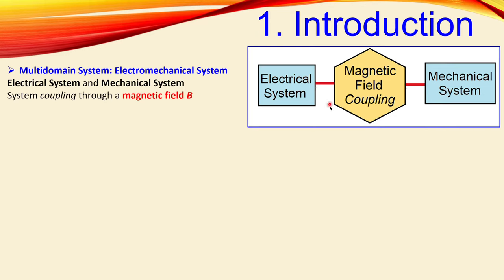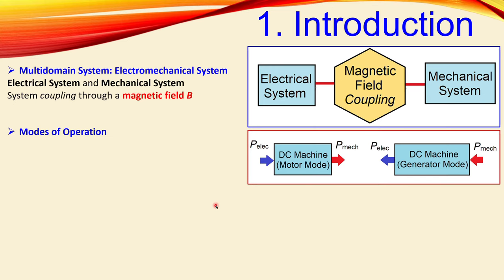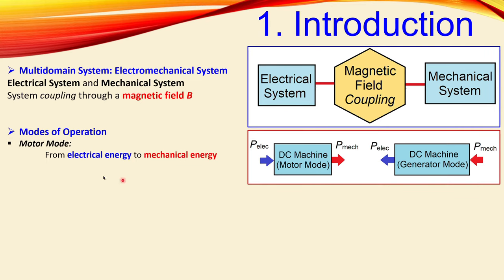This coupling is done by a magnetic field. Now for the motor's operation we have two modes. You can apply electrical power and get mechanical power out — that is motor mode. The reverse is called generator mode: you apply mechanical power, something is rotating, and you get electrical power out. So motor mode converts electrical energy to mechanical energy, and generator mode does the reverse.